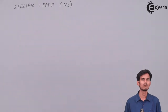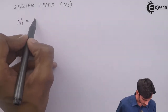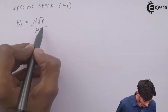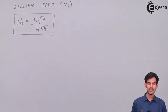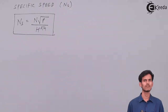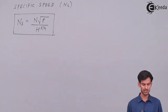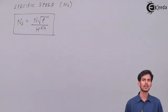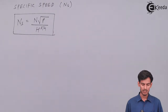There is a mathematical formula for specific speed. The formula is: N_s = N√P / H^(5/4). The derivation is beyond the scope of the syllabus, so we just memorize it. Here, N is the speed in RPM, P is the power in kilowatts, and H is the head in meters.